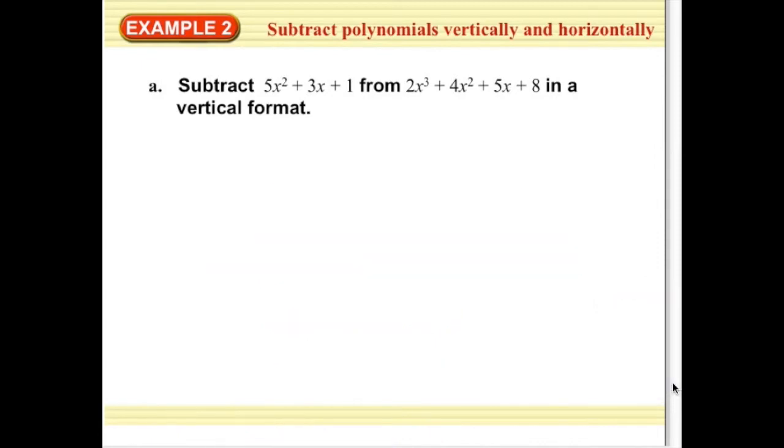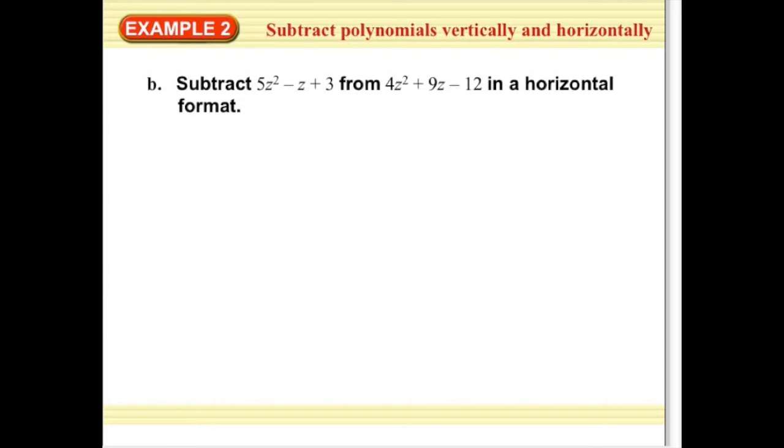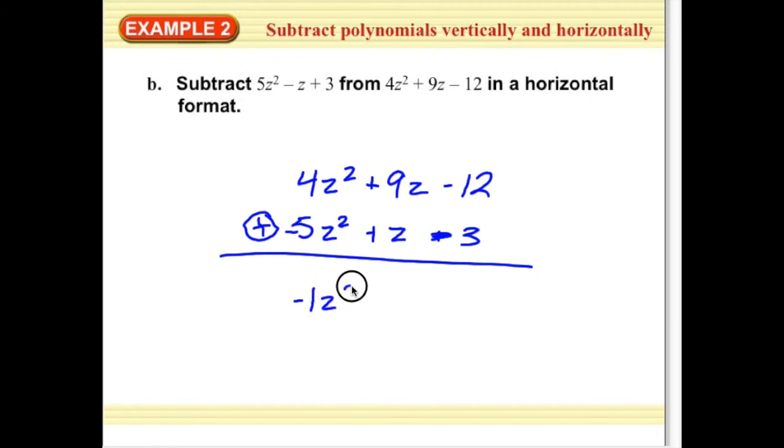We'll do one more for you in terms of subtraction. So subtract 5z squared minus z plus 3 from 4z squared plus 9z minus 12. So 4z squared plus 9z minus 12 subtract 5z squared minus z plus 3. Again, I'm going to change this to addition. So I'm going to change my signs throughout. And then combine. Positive 4 and negative 5 is negative 1z squared. Positive 9 and positive 1 is 10z. Negative 12 and negative 3 is negative 15. So that is my solution.